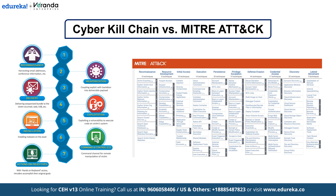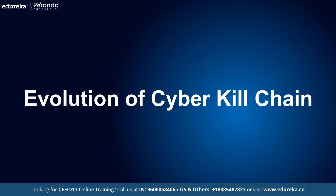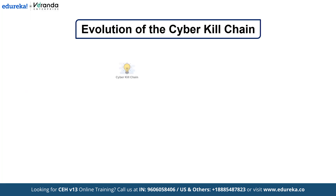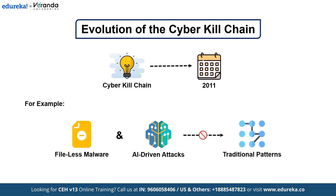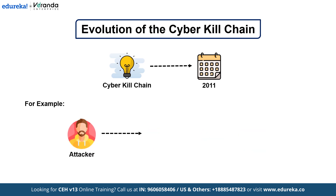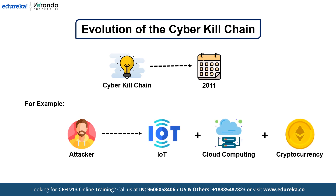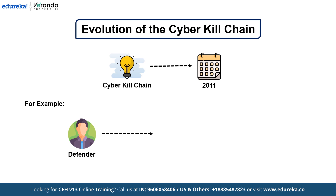As cyber threats have grown more sophisticated, the cyber kill chain has evolved to stay relevant since its introduction in 2011. However, attackers have become more sophisticated, often skipping or combining stages. For example, file-less malware and AI-driven attacks don't always follow traditional patterns. Attackers also exploit newer technologies like IoT, cloud computing, and cryptocurrency. This evolution has challenged defenders to adapt and integrate more dynamic frameworks like MITRE ATT&CK.